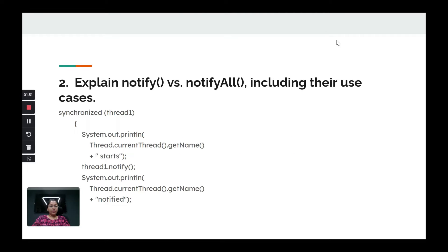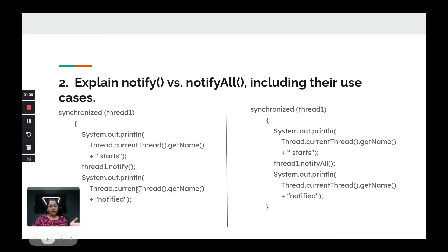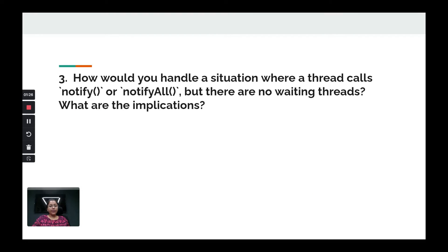Here's a code example: you have a synchronized block, you call notify and print some logs, and in case of notifyAll it is simply notifyAll. If you watch the first video, you'll see a running code example of wait, notify, and notifyAll.